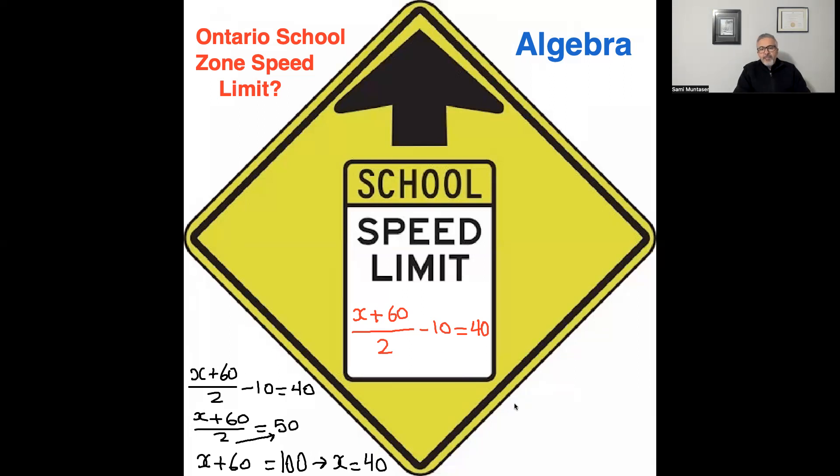The other way, if I have x plus 60 over 2 minus 10 equals 40, I could multiply the whole equation by 2. What it gives me, 2 times this, the 2s would cancel and you end up with x plus 60.